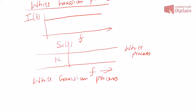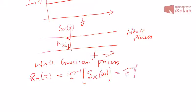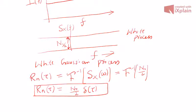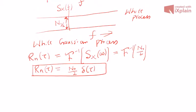Suppose this constant power spectral density value is written as n₀/2. Then the autocorrelation function will be the Fourier inverse of the power spectral density — that is the Fourier inverse of the constant n₀/2. Since the Fourier inverse of a constant is a delta function, the autocorrelation function is (n₀/2)·δ(τ). This will be the autocorrelation function of a white Gaussian process.